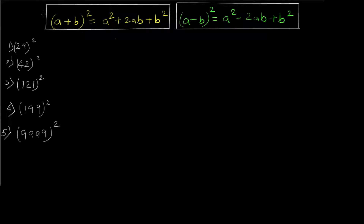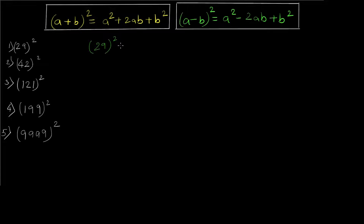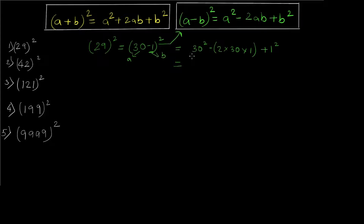The first question we're going to solve is 29². If you solve it using the conventional method — 29 into 29 — it's tedious and will consume time. This trick will speed up your calculations during aptitude exams. We can represent 29 as 30 minus 1, so we apply the (a-b)² formula where a=30 and b=1. That gives us 30² − 2×30×1 + 1² = 900 − 60 + 1 = 841.